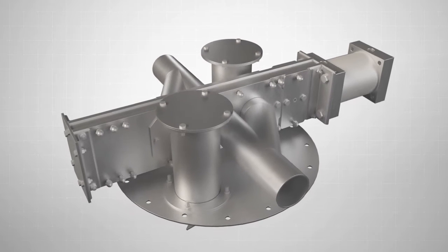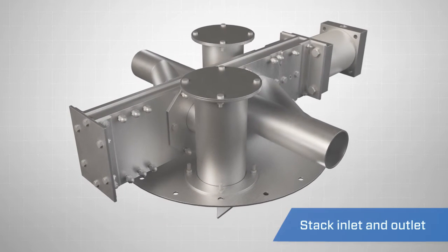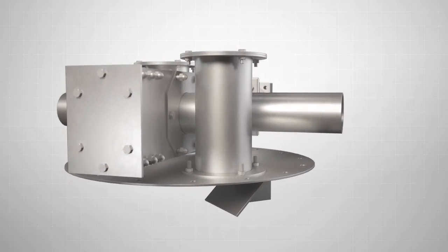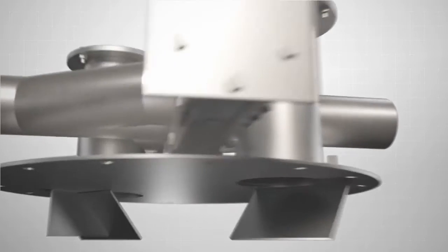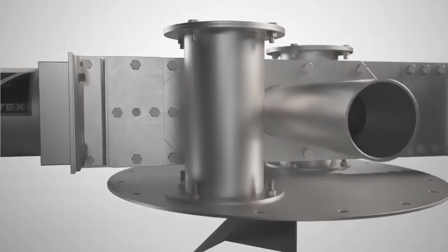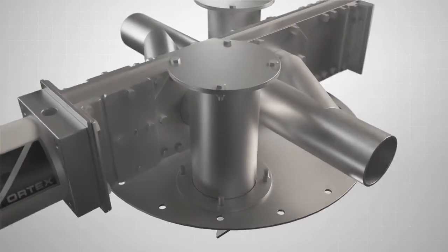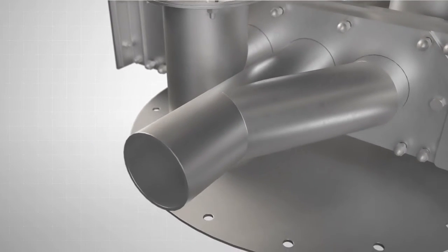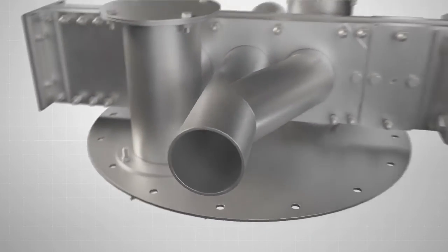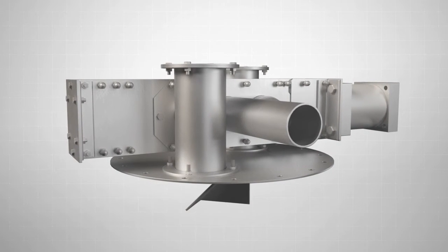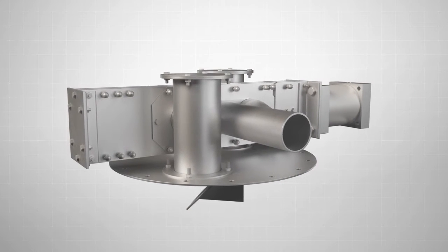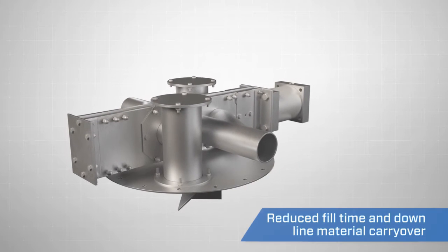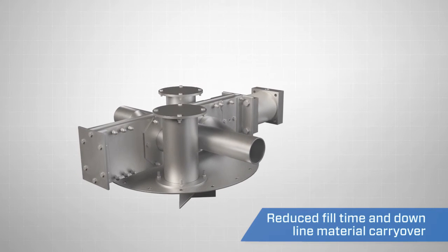The diverter is designed with a stack inlet and outlet. As materials are pneumatically conveyed into the hopper through the inlet stack, the displaced air is immediately exhausted back out of the hopper through the outlet stack. This allows exhausted air pressure to continue downstream, away from the hopper. The diverter's design separates the inlet-outlet stacks for improved air and material separation, reducing fill time and downline material carryover.